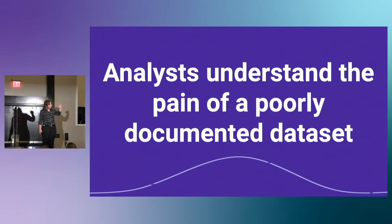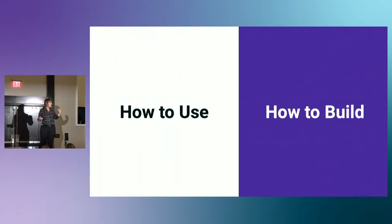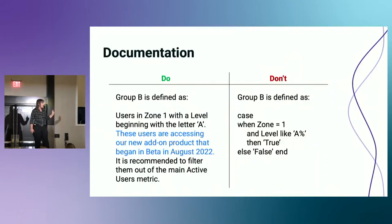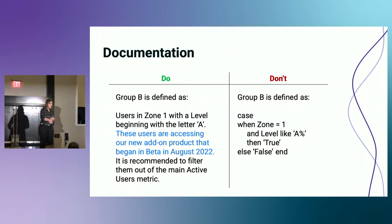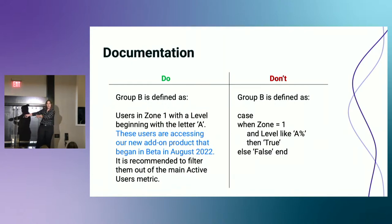So we've got our model, we've got our tests, and now we've got to document it. Analysts, in my opinion, are really good at documenting because they understand how much of a pain it is to come back to a dataset and just have no clue what it is. My hypothesis is that good documentation is based on how to use the dataset, not how to build it. For example, if I'm defining Group B — if I document it as these are the users that are using the add-on product, they're in beta, here's a date, and it's recommended not to use them in this metric — that's tons of information that's helpful six months from now. How to build it would be giving me the CASE WHEN statement, which isn't helpful. If I need the CASE WHEN statement, I'll go in the code itself.